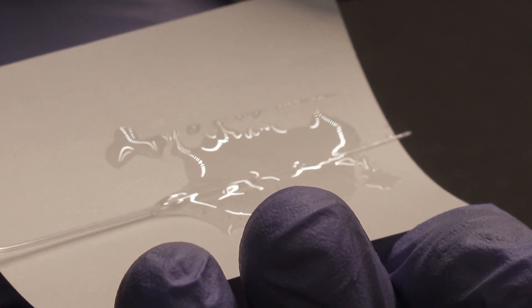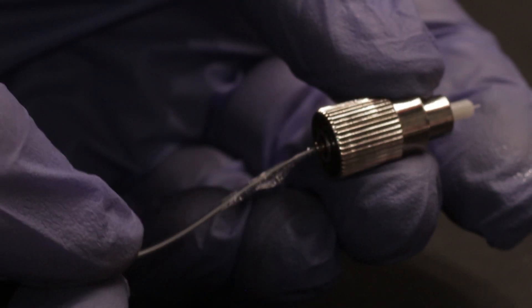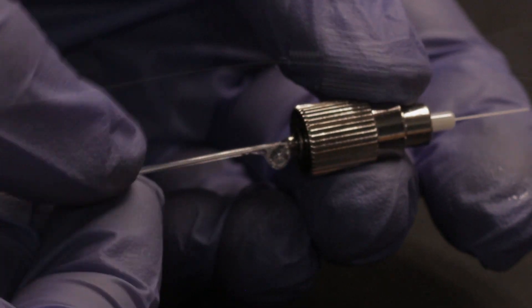Coat the raw laser wire in the resin and hardener mix. Right after this step, feed the raw laser wire through the FC connector.